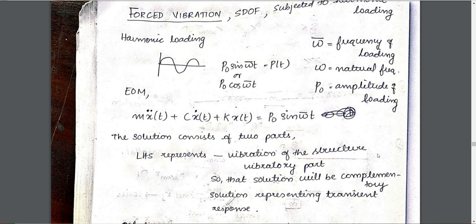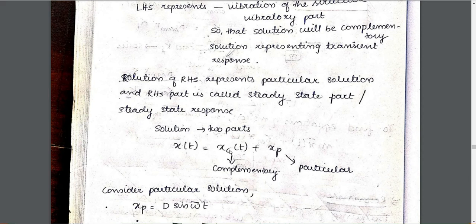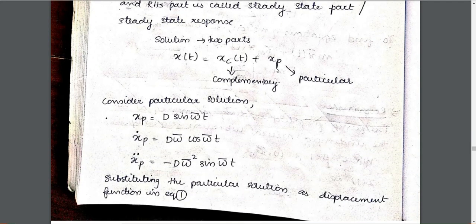The solution consists of two parts: LHS and RHS. The LHS represents the vibration, which is the complementary part, while the RHS represents the particular solution, called the steady-state part. The total solution is the complementary part plus the particular part, where xp equals d sin(omega_bar * t). This is the solution we have to learn directly.